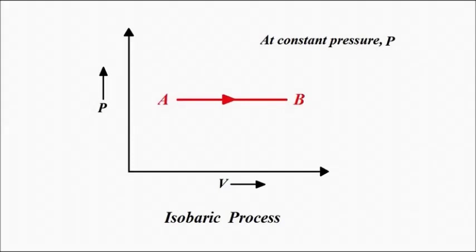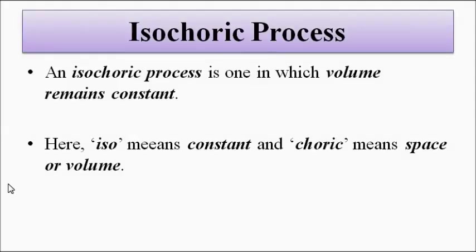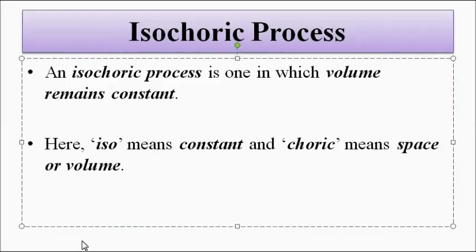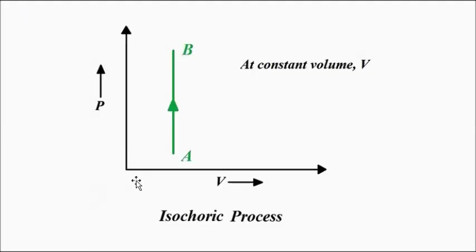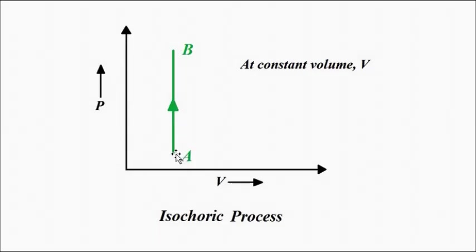The third type is the isochoric process — one in which volume remains constant. 'Iso' means constant and 'choric' means space or volume. On the P-V graph, it appears as a straight line parallel to the pressure (y) axis. Volume remains constant while pressure changes: from initial state A at pressure PA to final state B at pressure PB, volume is constant but pressure is changing.